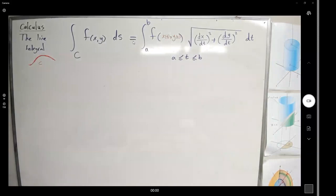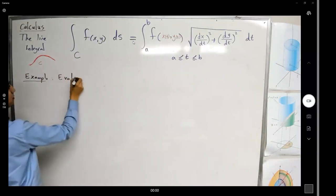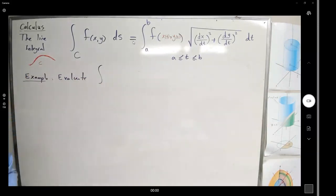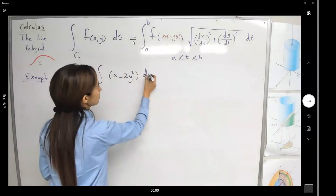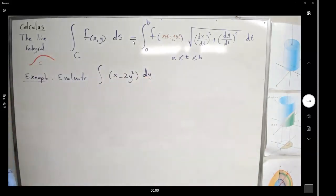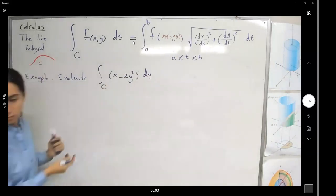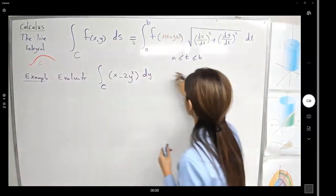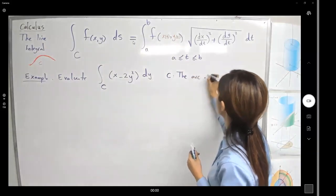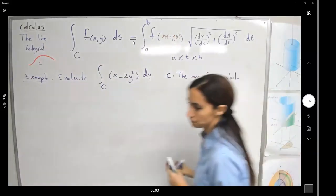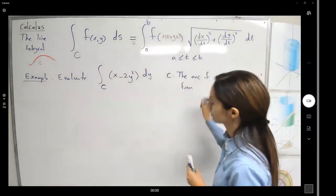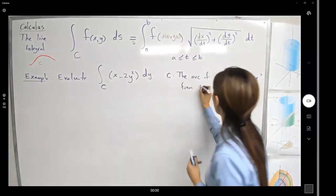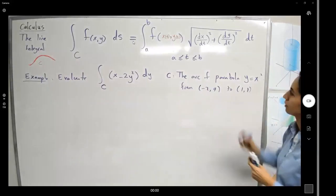Now for another example: evaluate the line integral of (x − 2y²) dy over curve C, where C is the arc of the parabola y = x² from (−2, 4) to (1, 1).